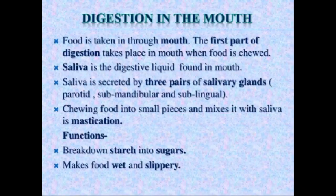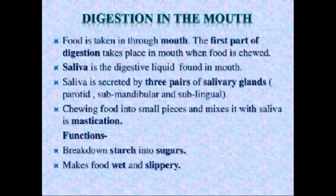Saliva is secreted by three pairs of glands: parotid, submandibular and sublingual. Chewing food into small pieces and mixing it with saliva is called mastication. When you chew the food — break it into smaller parts and mix it with saliva — that process is called mastication. Its function is to break down starch into sugar and to make the food wet and slippery.